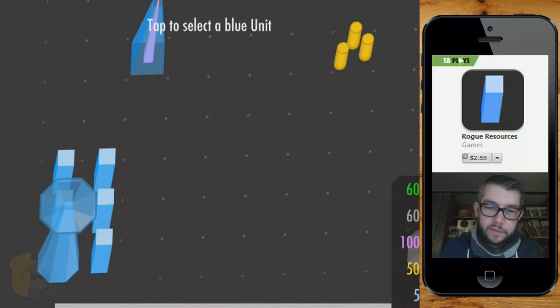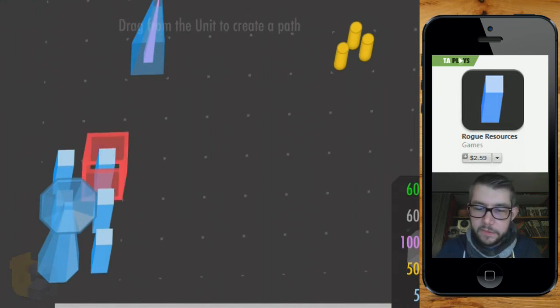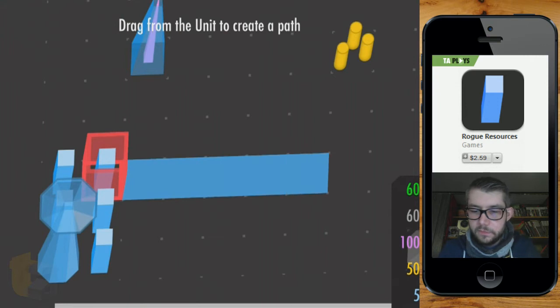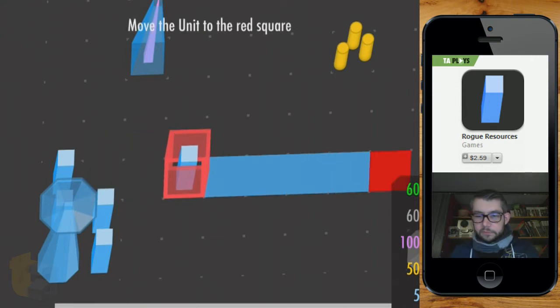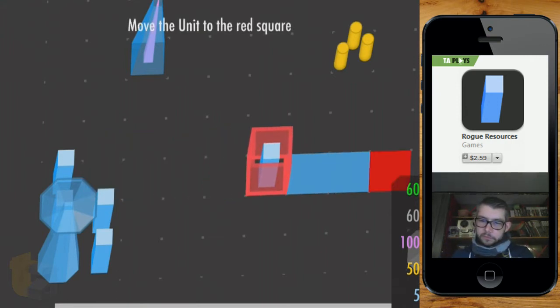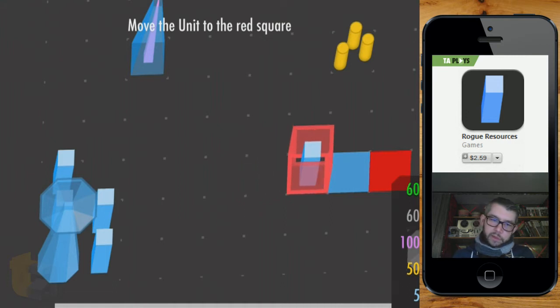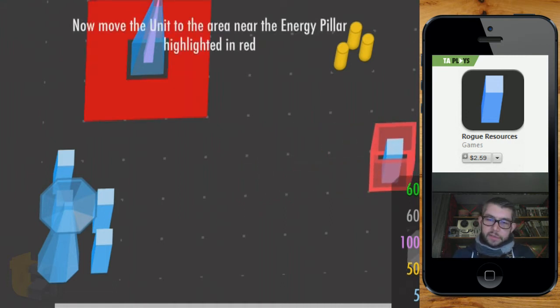Tap to select a blue unit. Okay. Drag from the unit to create a path.